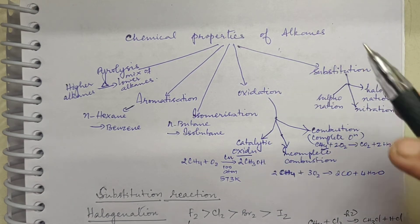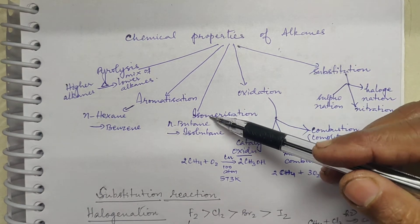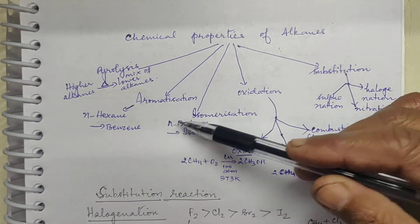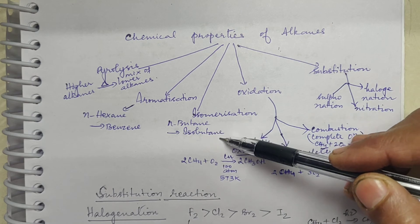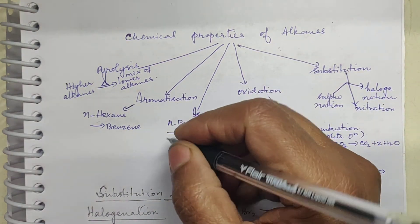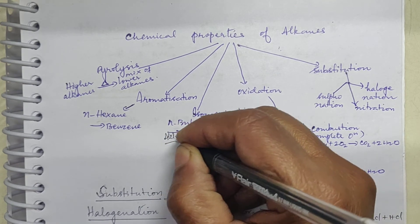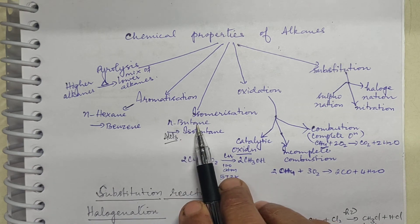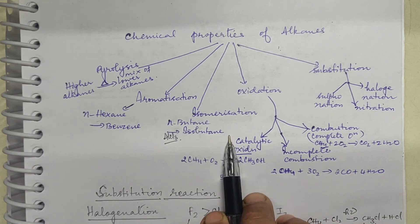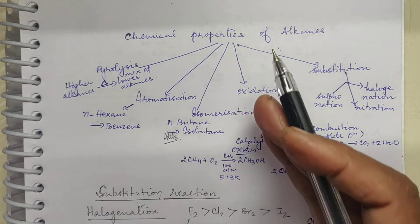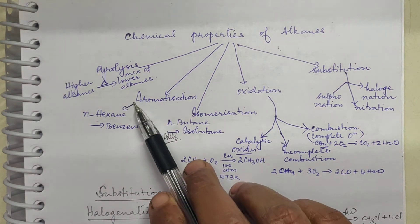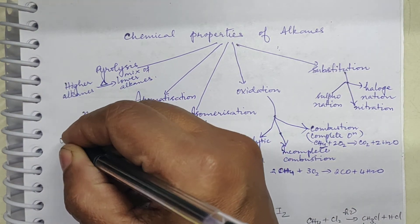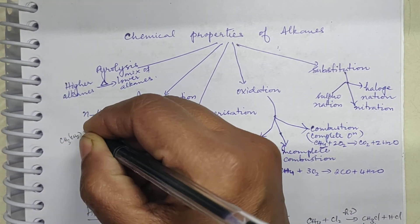The next property is isomerization, where isomers are formed. For example, n-butane is converted into isobutane in the presence of AlCl3, which is an isomerizing agent. Both n-butane and isobutane are C4H10 — one isomer is converted into another.